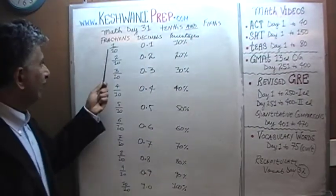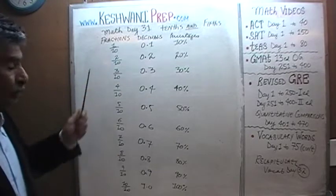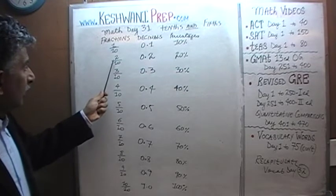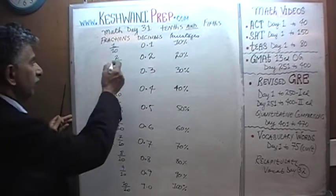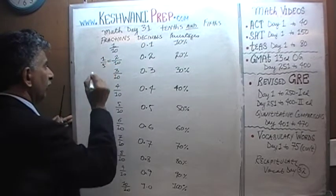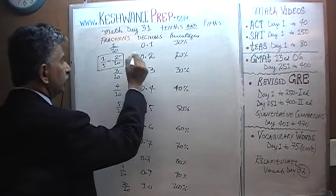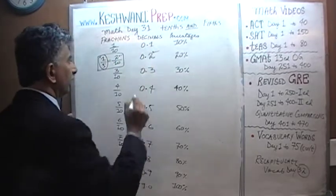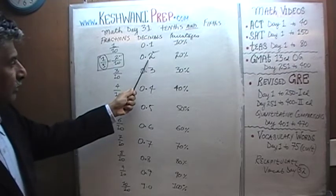For example, 1 tenth — how can we reduce 1 tenth? 1 tenth cannot be reduced any further; it is just 1 tenth. The next is 2 tenths. If you divide the top and bottom by 2, 2 tenths reduces to 1 fifth. So if you know that 2 tenths is 20%, then 1 fifth is also 20%, because 1 fifth is just a reduced form of 2 tenths, which is 0.2.